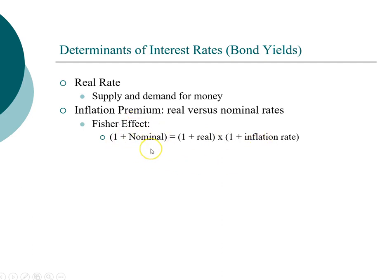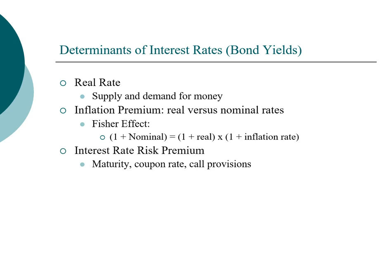The nominal rate is what you typically find in any interest quotation — with the exception of TIPS. So if you see an APR reported by a credit card company or a CD return at a bank, those are nominal rates. In addition to compensating investors for inflation, investors may also demand an interest rate risk premium. Factors such as longer maturity, lower coupon, or a call provision all increase interest rate risk, and therefore that bond will carry a higher interest rate risk premium.